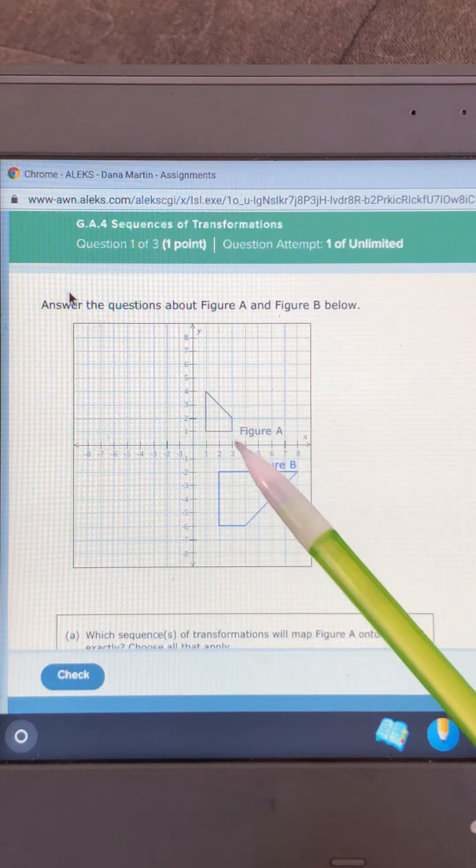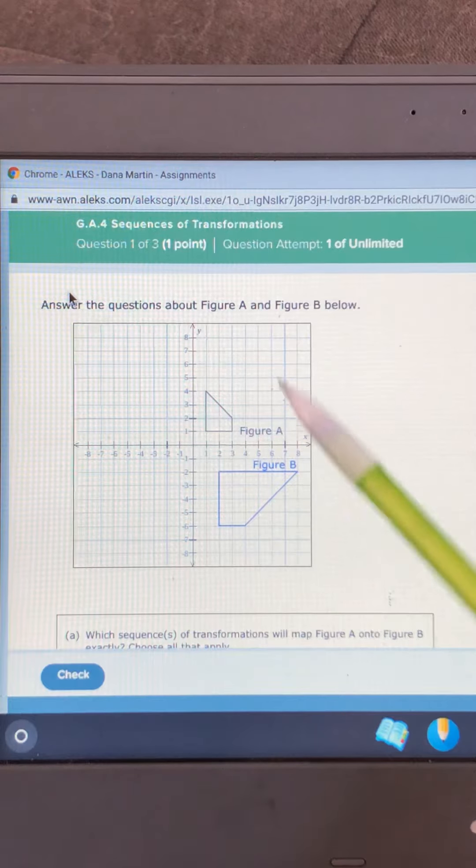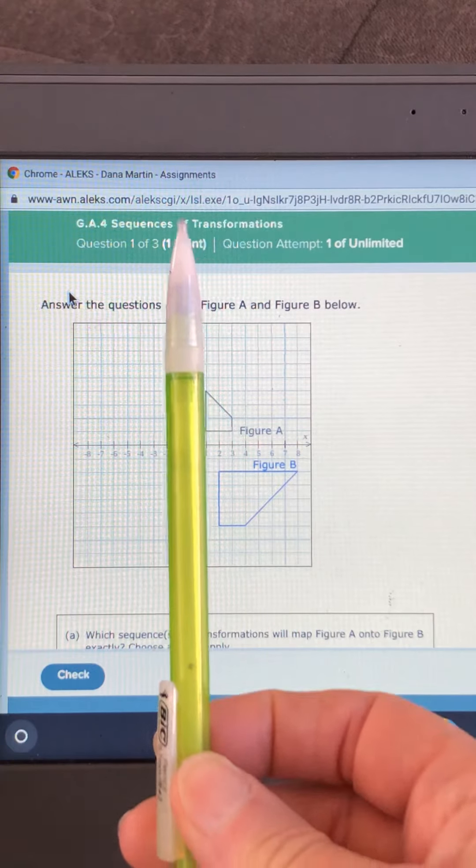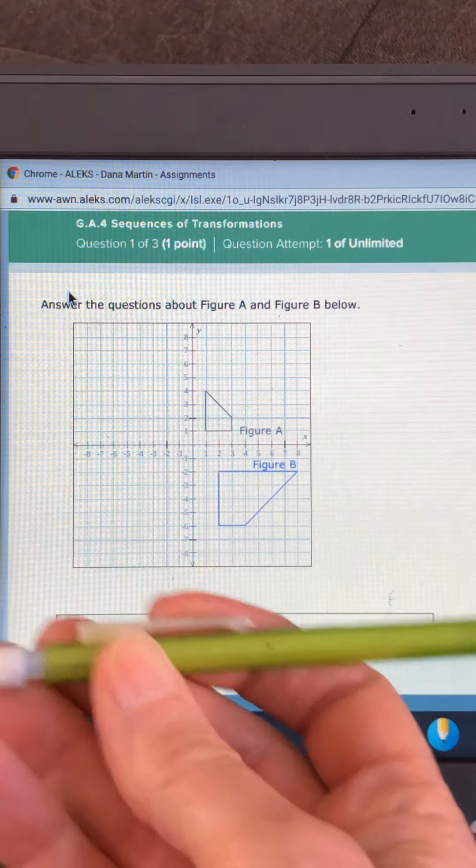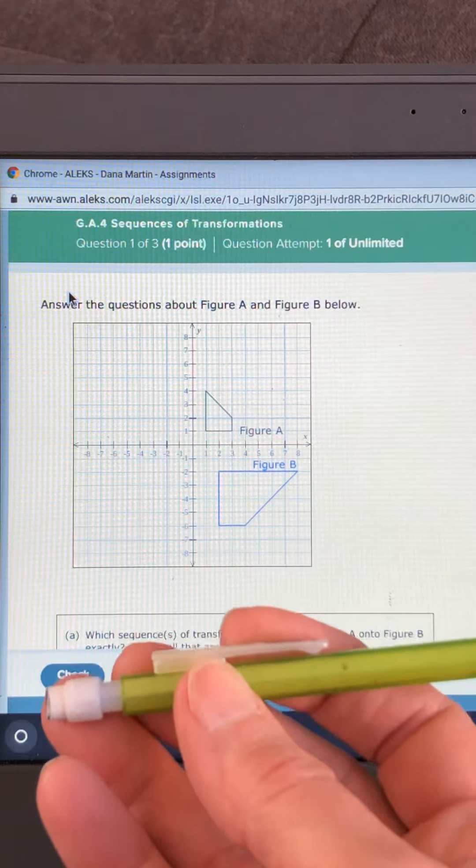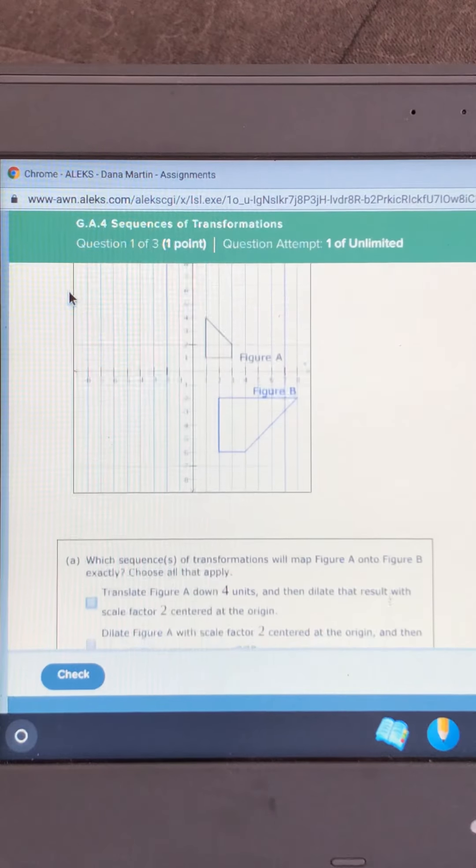Now we just have to figure out what way we use to get figure A to figure B. First off, when you see the shape pointing up and then it's like this, chances are it's pointing this way, chances are that's a rotation. About nine times out of ten it's a rotation.